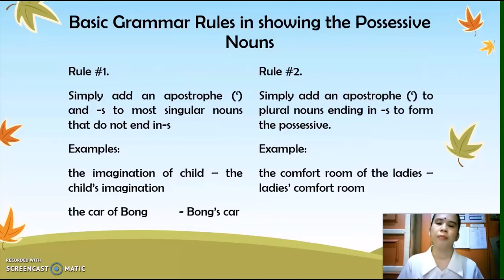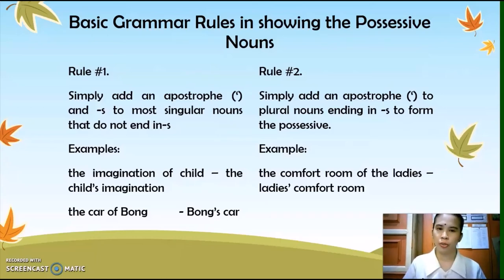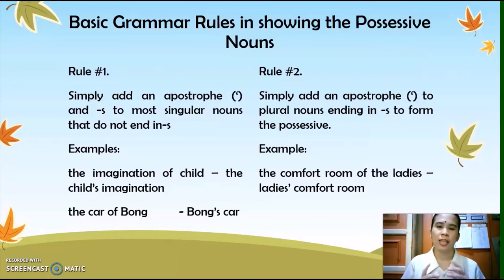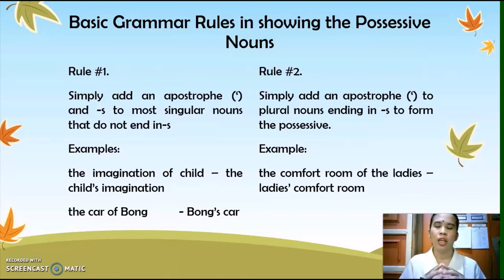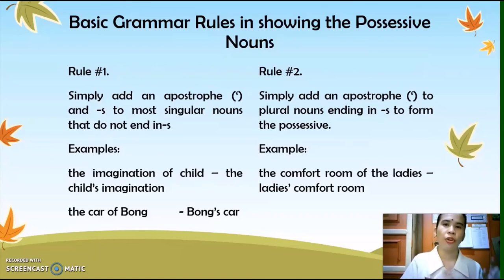Rule number two: simply add an apostrophe to plural nouns ending in S to form the possessive. For example, 'the comfort room of the ladies' — ladies is a plural noun. To make it a plural possessive noun, we put an apostrophe next to the S. So it becomes 'the ladies' comfort room.'